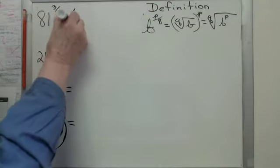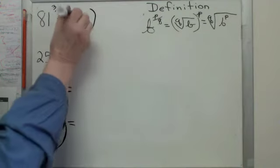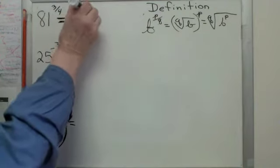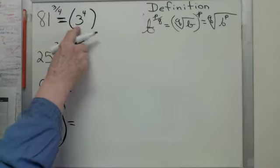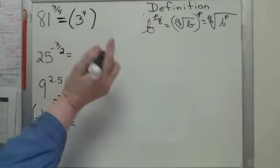First of all, 81, I need to rewrite it. I could use 9 squared. I could also use 3 to the 4th. 3 to the 4th is the better choice. The smaller the base, the better. So when you have a choice, go for the smaller number.